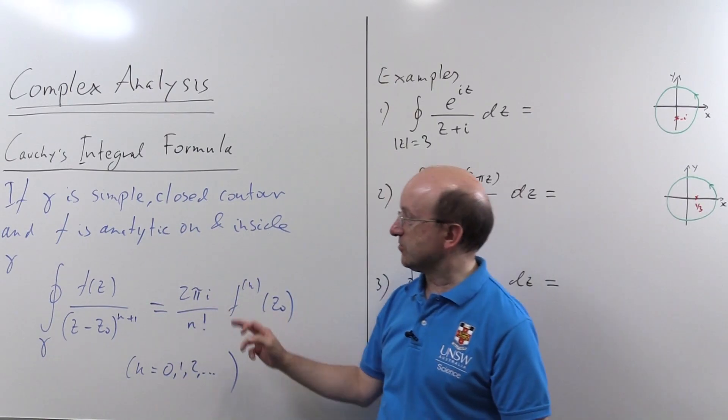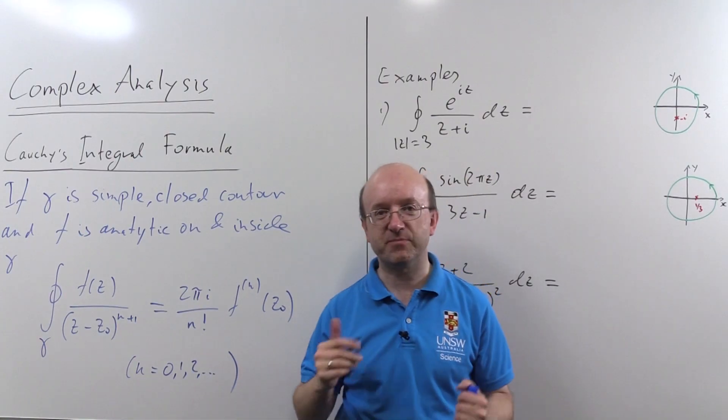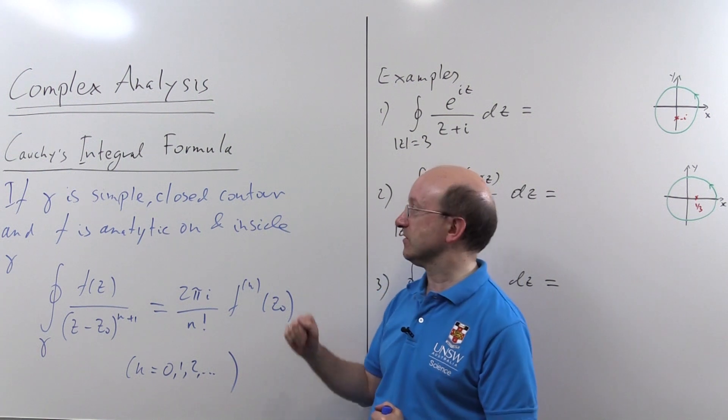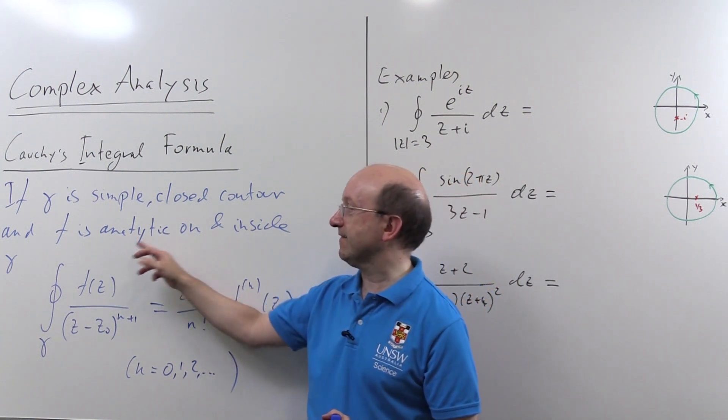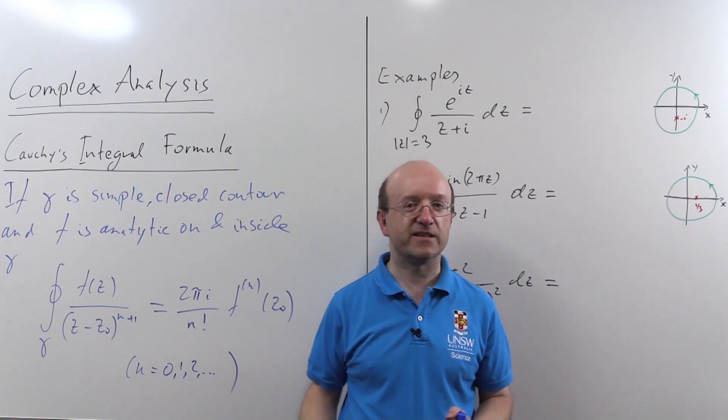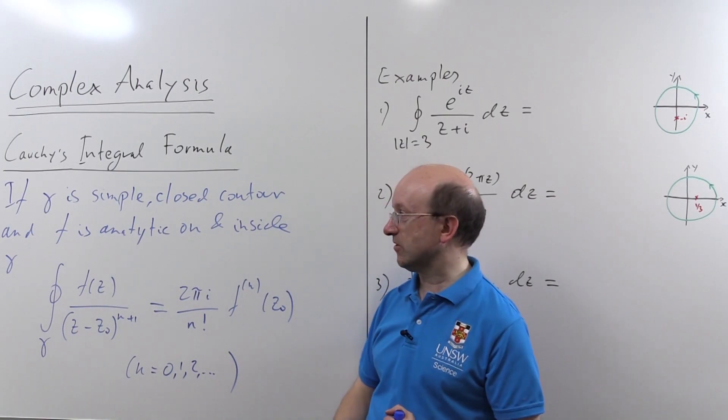And what do these symbols mean? Well, if gamma is to be a simple closed contour, that means it doesn't cross itself, except for the fact the beginning point and the end point are the same. And you've got a function f that's analytic on and inside gamma. And inside makes sense if you're a simple closed contour.